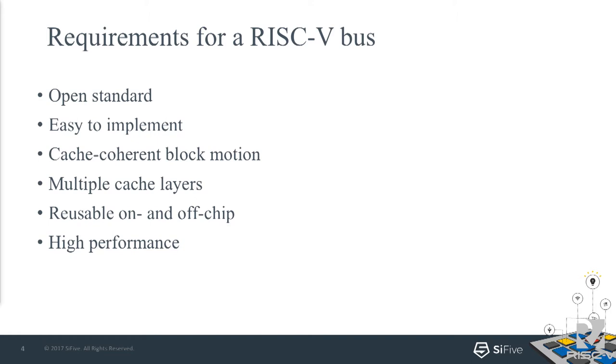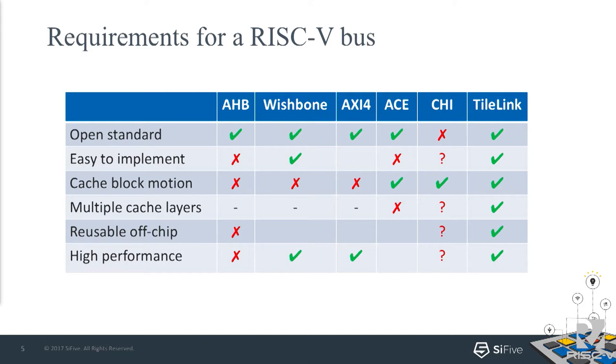We went through the list and asked, what are our options? HP is completely inappropriate for this, though it is an open standard. Wishbone, a protocol I used quite a bit before coming to SCI-5, is a little bit better in that it's certainly one of the easier protocols you can use, but unfortunately it doesn't have cache coherency in the sense that you can move cache blocks around.